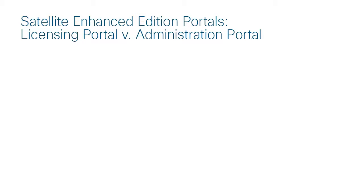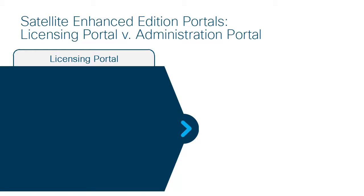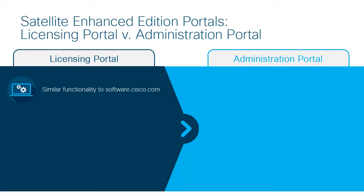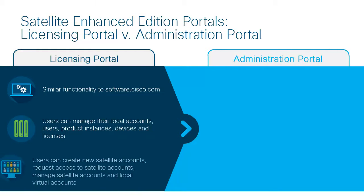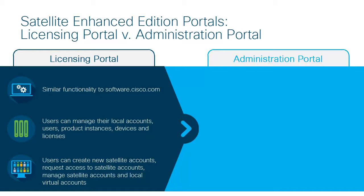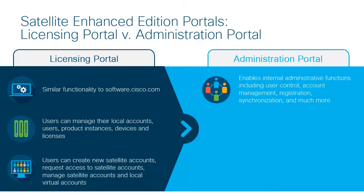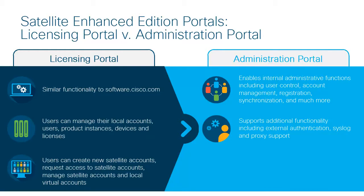To support the Satellite Enhanced Edition functionality, there are two portals a user will access: the licensing portal and the administration portal. The licensing portal has similar functionality to software.cisco.com and allows a user to manage their local accounts, users, product instances, devices, and licenses. Account management functions, similar to Smart Account Administration, allow users to create new satellite accounts, request access to satellite accounts, and manage satellite accounts and their local virtual accounts. The administration portal functions separately and allows for internal administrative functions such as user control, local account creation, registration, and synchronization, along with network, system, and security settings. It also has options to configure external authentication, syslog, and proxy support, and is restricted to only authorized users.